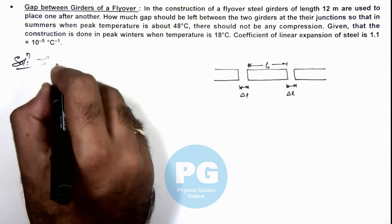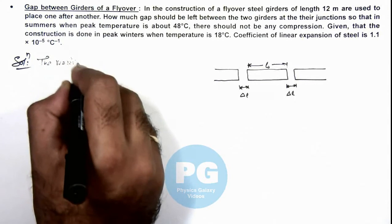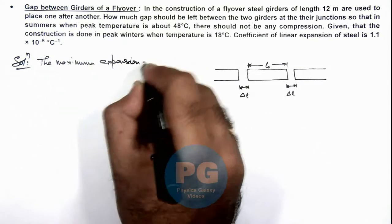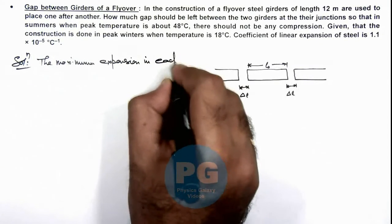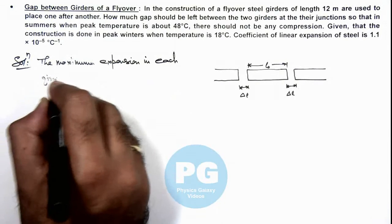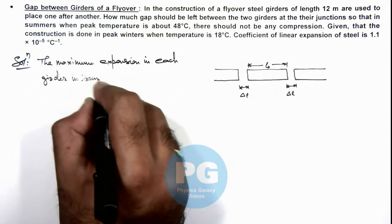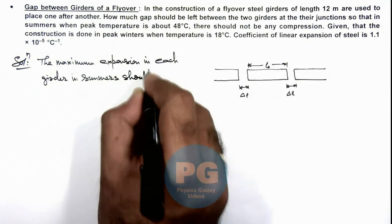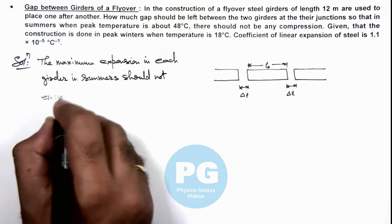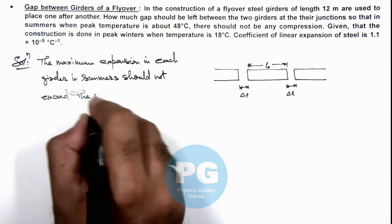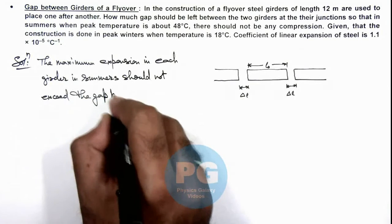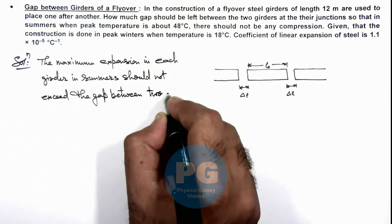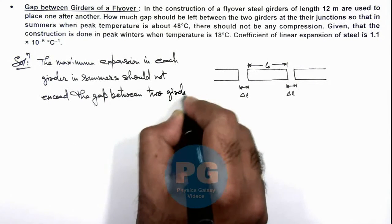So we can write: the maximum expansion in each girder in summers should not exceed the gap between two girders which are placed successively.